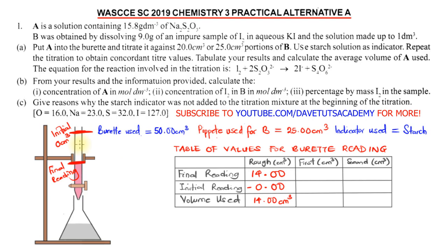We do the rough titration because water droplets may be in the burette; once we fill it with solution A, it flushes out any droplets. The rough value is often not used because it differs from the first and second readings. Since the rough titration stopped at 14.0 cm³ and the burette holds 50 cm³, we have more than enough to repeat the experiment two more times.